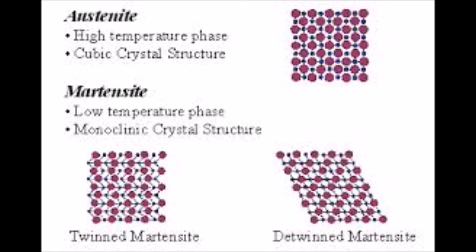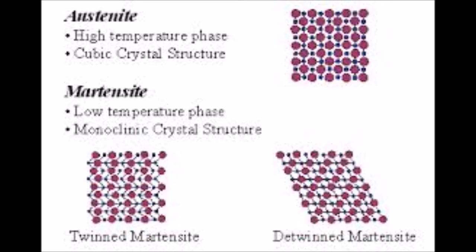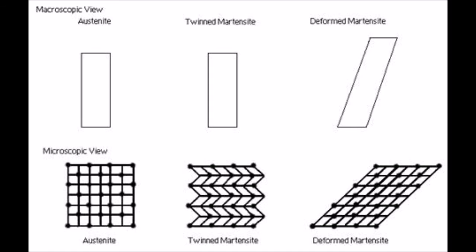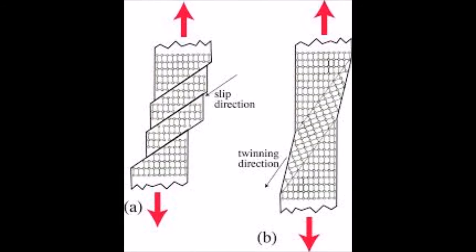There is an austenite phase, which is the stronger of the two, and there is a martensite phase. While martensite is the weaker phase, it is more stable at lower temperatures, which is why it is more commonly used. The martensite phase has a parallelogram crystal structure with 24 variations. When SMAs in martensite are subject to external stress, they deform through the so-called detwining mechanism,